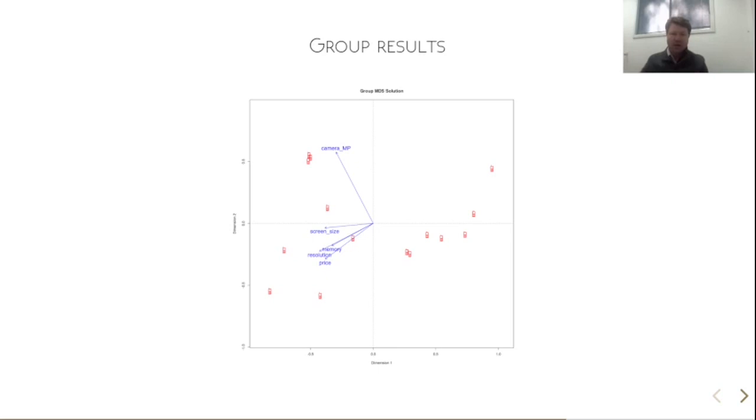So we can see here in red are all the individual phones, individual options. We see that screen size, memory, resolution and price all kind of correlate quite highly with each other in this MDS solution. And camera megapixel is kind of orthogonal to that.